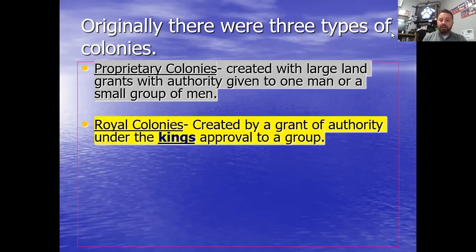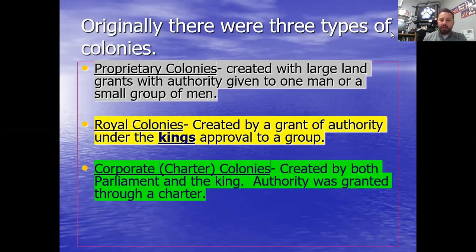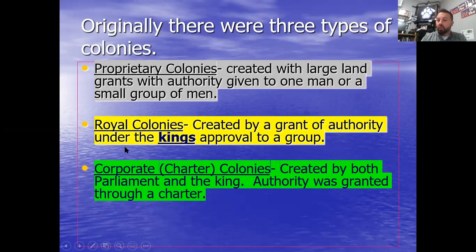The next type was a royal colony — created by a grant of authority under the king's approval to a group, and subject to the laws of England. Royal colonies had more protections under English law, while proprietary colonies might be allowed to do more of their own thing. The third type was a corporate or charter colony, created with both parliament and the king. Jamestown starts as a corporate colony but later turns into a royal colony because of the Anglo-Powhatan War — things couldn't get handled, so the British took over.